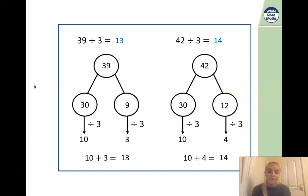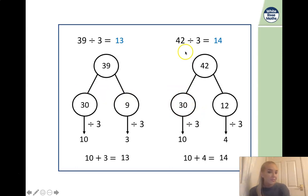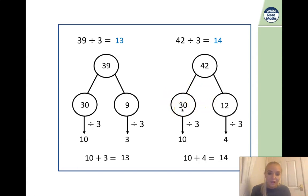It's really useful to use your knowledge of the 10 times table to decide what the first number is going to be. If my divisor was 4, I know I could use 40 as one of my numbers because that can be divided by 4. If my divisor was 5, I could have my first number as 50 because that is automatically a multiple of 5.